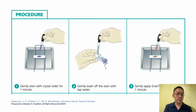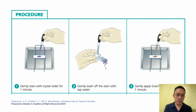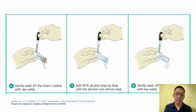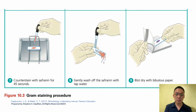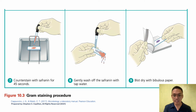Here is the procedure summary for gram staining: First, apply crystal violet and gently wash off with tap water. Apply Gram's iodine for one minute, then gently wash with tap water. Apply 95% alcohol as a decolorizing agent until it runs almost clear, then gently wash off with tap water. Counter stain with safranin for 45 seconds, then gently wash out the safranin with tap water, and lastly blot dry with bibulous paper.